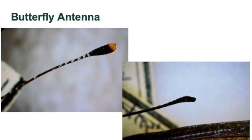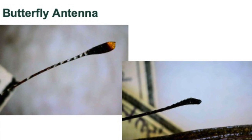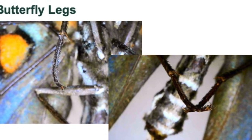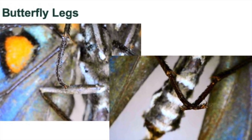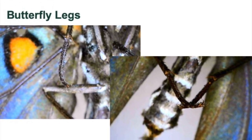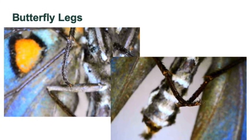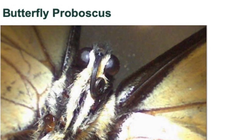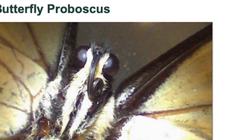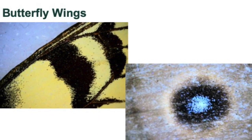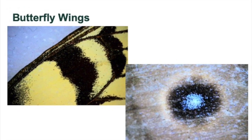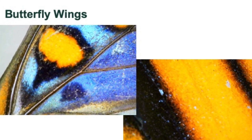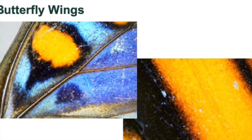Here we see the butterfly antenna — you can see the distinct clubs or knobs on the ends of each antenna. Here are the butterfly legs. One of the really interesting things about butterflies is that they taste with their feet — can you imagine having to taste your lunch with your feet? But this is helpful for butterflies as they land from leaf to leaf and flower to flower. On this picture of a giant swallowtail, we see its long curly proboscis that it uses to sip nectar. We can see here that butterfly wings are made of teeny tiny little scales — tiny pieces of powder that cover the butterfly's wings and help give it design, decoration, and also help it fly.